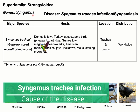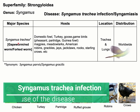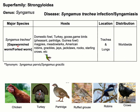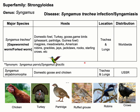Superfamily Strongyloidea, genus Syngamus. The name of the parasite is Syngamus trachea. This parasite is also known as gapeworm, red worm, or fork worm. It most commonly affects a wide range of domestic and wild birds such as domestic fowl, turkey, goose, magpie, jays, crows, etc. The location of this parasite is in the trachea and lungs, and its distribution is worldwide.